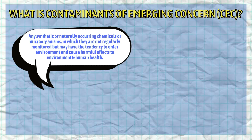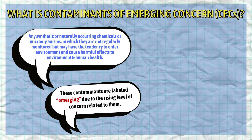Generally, the contaminants of emerging concern, or CEC, is any synthetic or naturally occurring chemicals or microorganisms. They are not regularly monitored but may have the tendency to enter the environment and cause harmful effects to both the environment and human health. This type of contaminant is considered emerging due to the rising level of concern related to them.